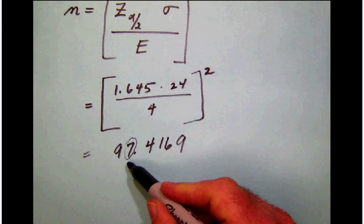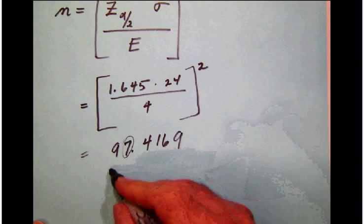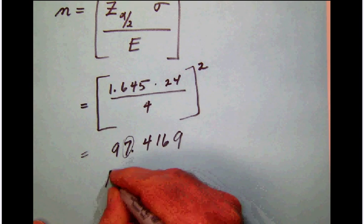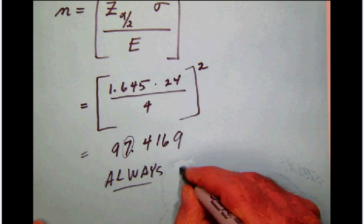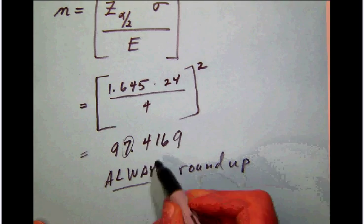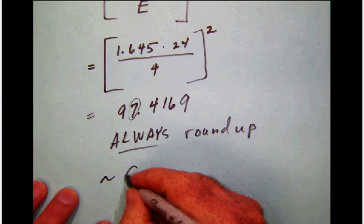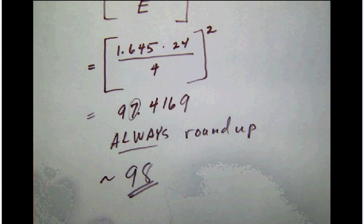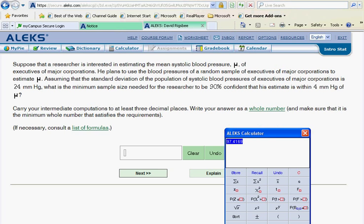Here though, we have a special rule, and that is always round up to a whole number. And even if this is less than half, which it is, we were going to round this up to 98. So be careful. Always round up to a whole number on sample size calculations. Let's enter 98 and see if Alex is pleased with our work.